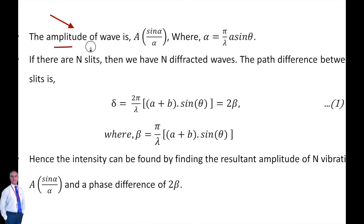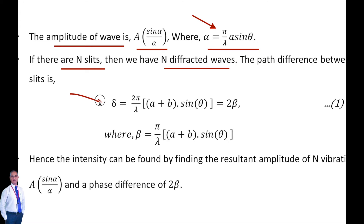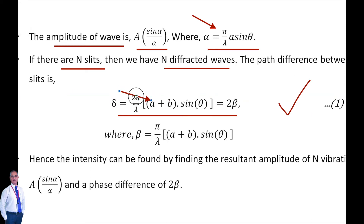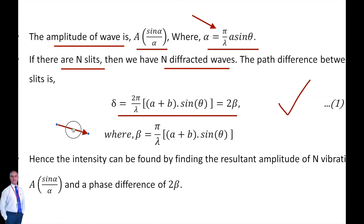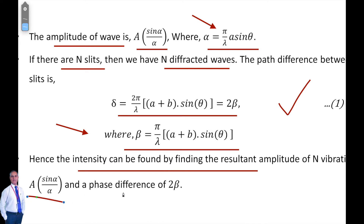The amplitude of the wave from a single slit is A(sin α / α), where α = (π/λ) · a · sin θ. This is the equation for a single slit. If there are N number of slits, we have N diffracted waves. The path difference between two consecutive slits is δ = (2π/λ)(a + b)sin θ = 2β, where β = (π/λ)(a + b)sin θ — this is equation number 1. Hence the intensity is found from the resultant amplitude of N vibrations each of amplitude A(sin α / α) with phase difference 2β.